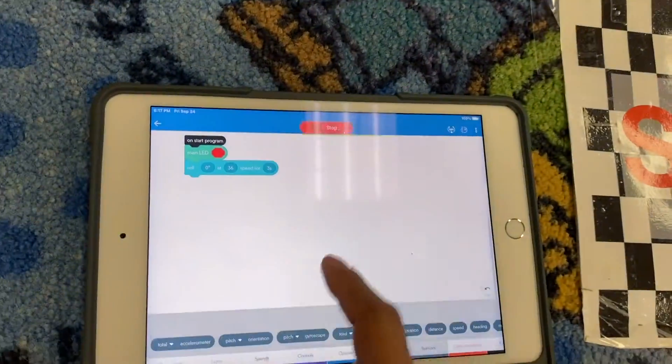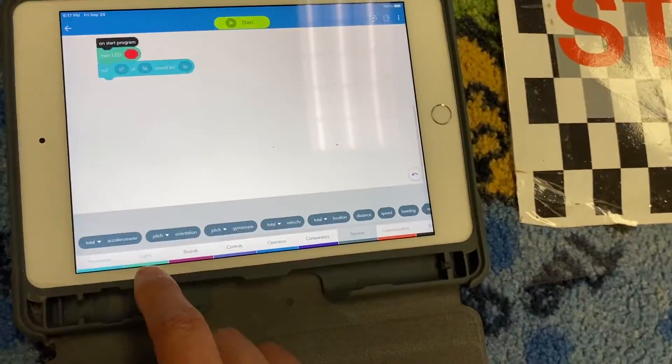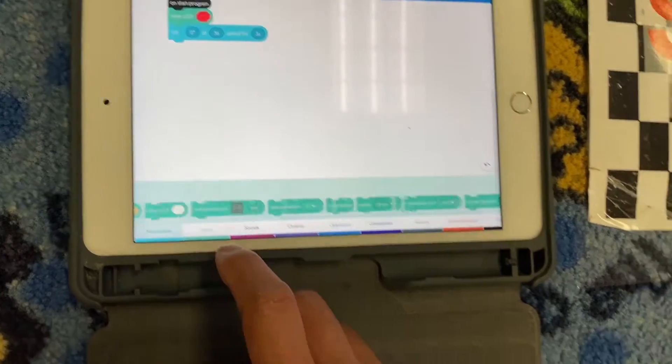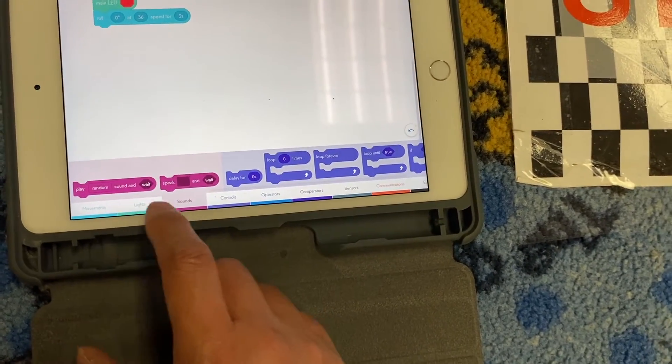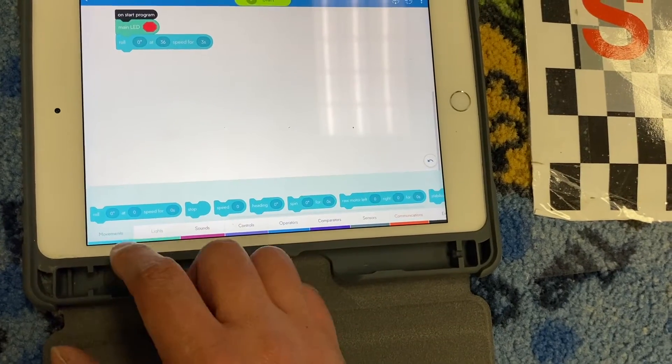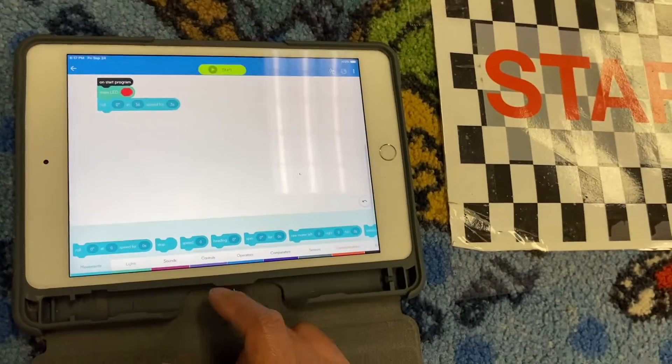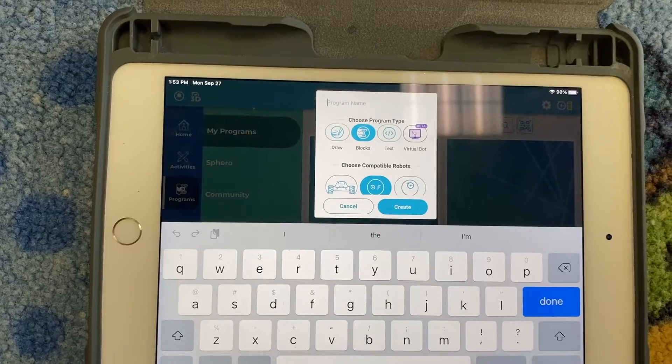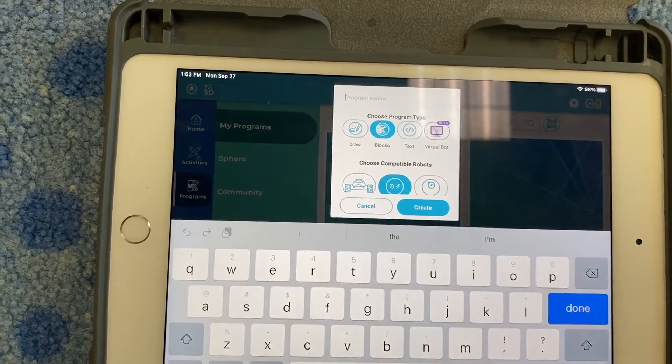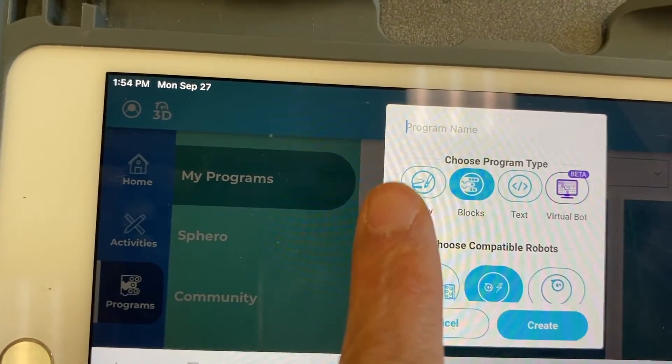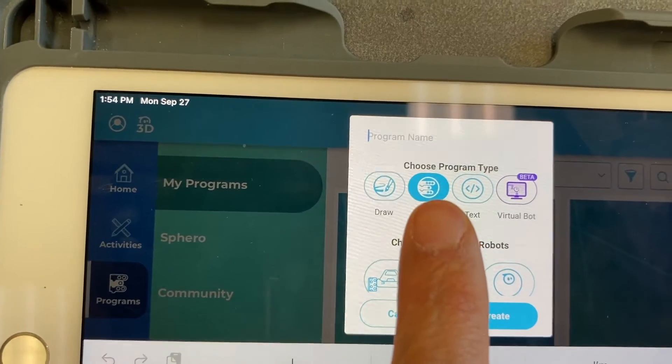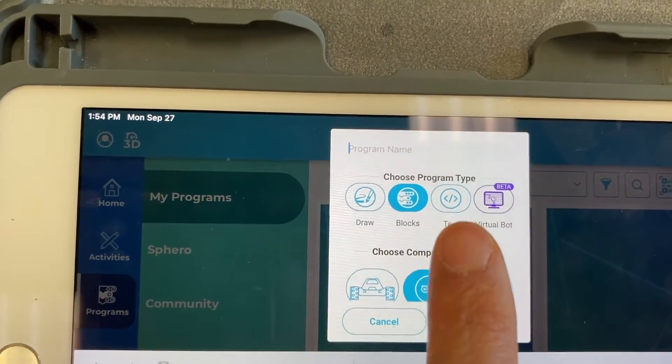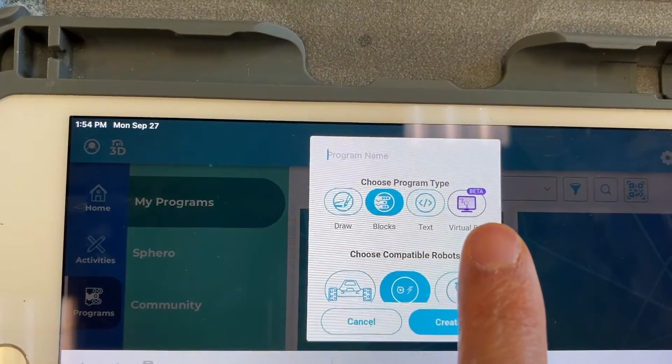There's more things you can do here, so I'm going to press Stop. There's a lot more you can do here, there's movements, lights, sounds, sensors, there's so much guys to begin. This is a good place to start. As you can see, there are more ways to code a Sphero. There is the draw coding, the block coding, the text coding, and virtual bot coding that's in beta, that's being tested at the moment.